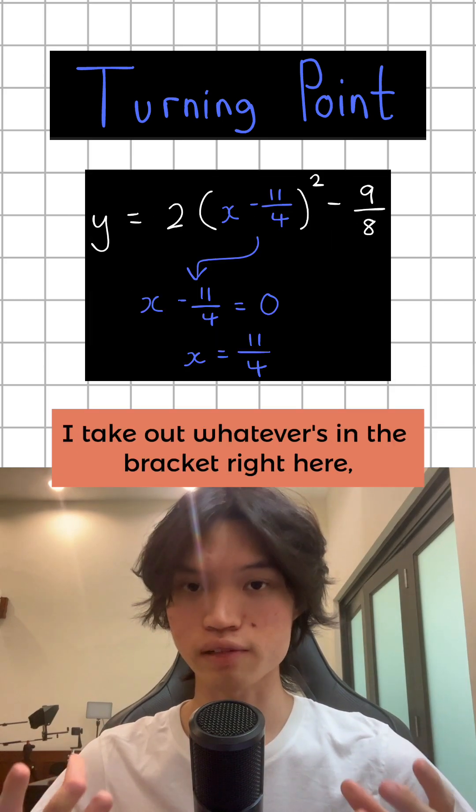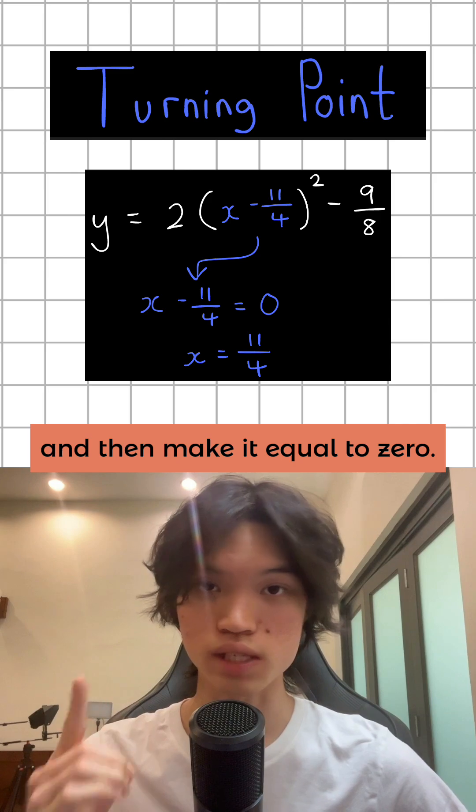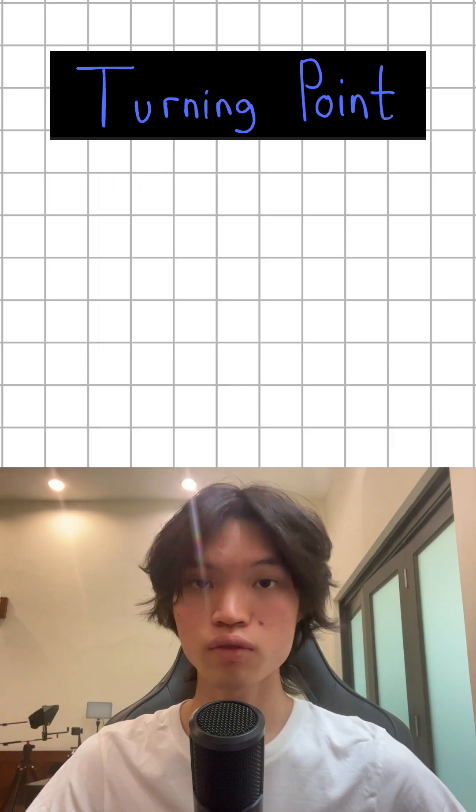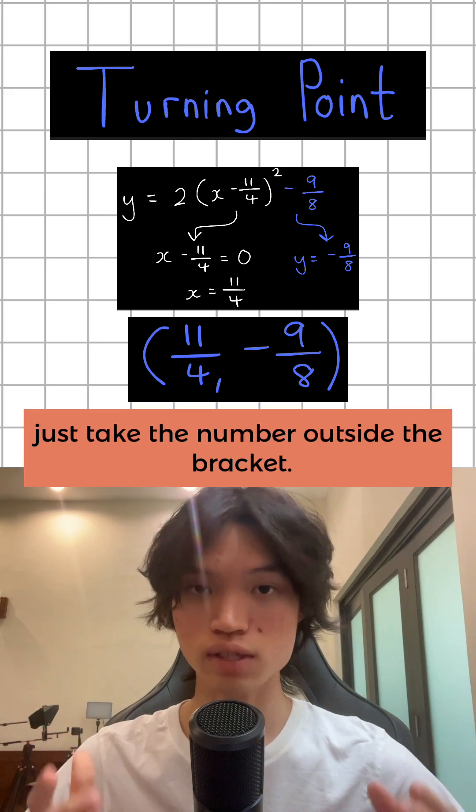I take out whatever's in the bracket right here and make it equal to 0. When we solve for x, we get the x-coordinate of the turning point. For the y-coordinate, just take the number outside the bracket.